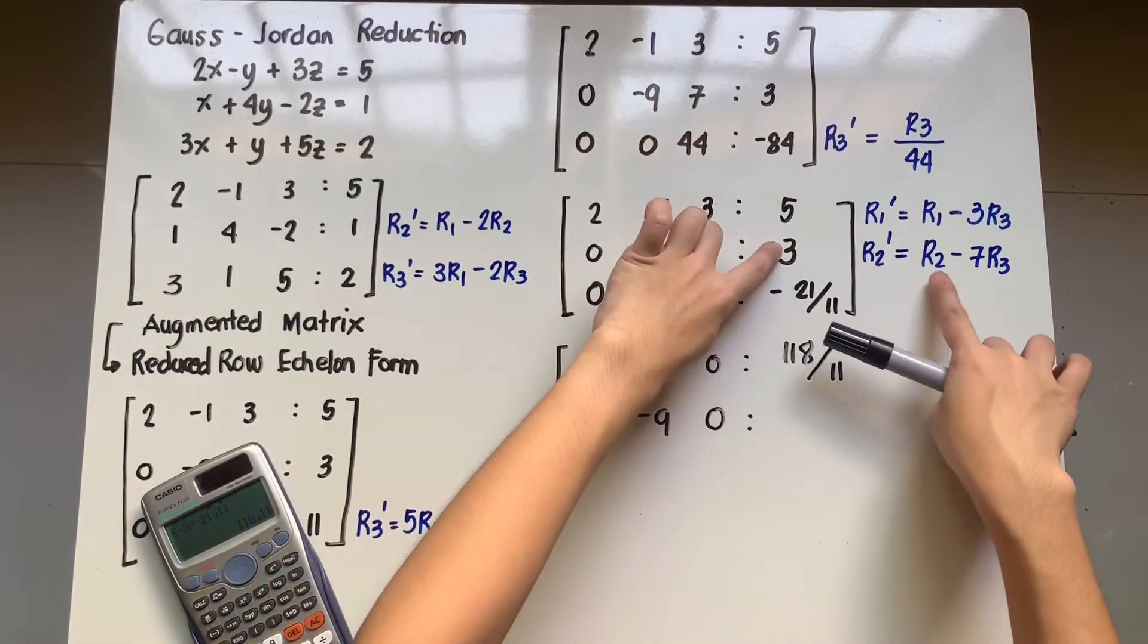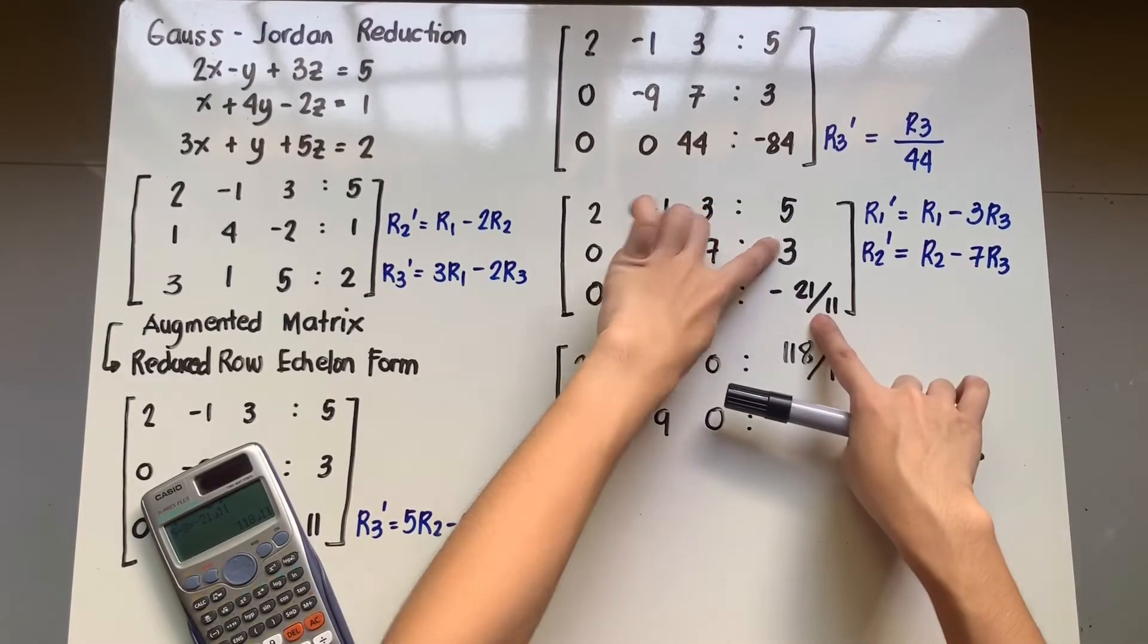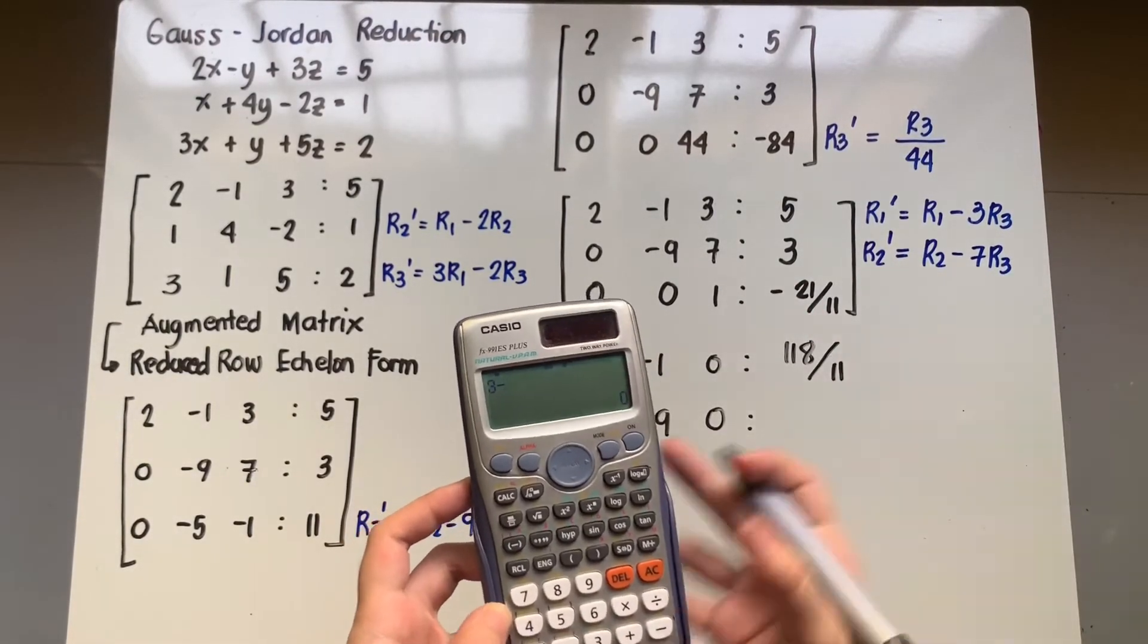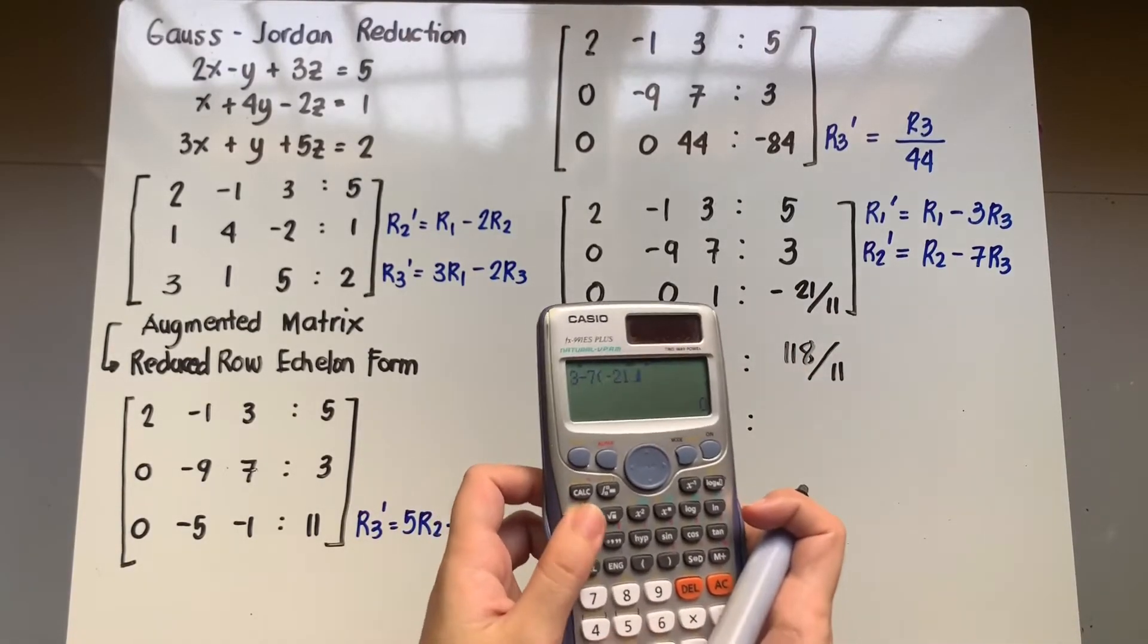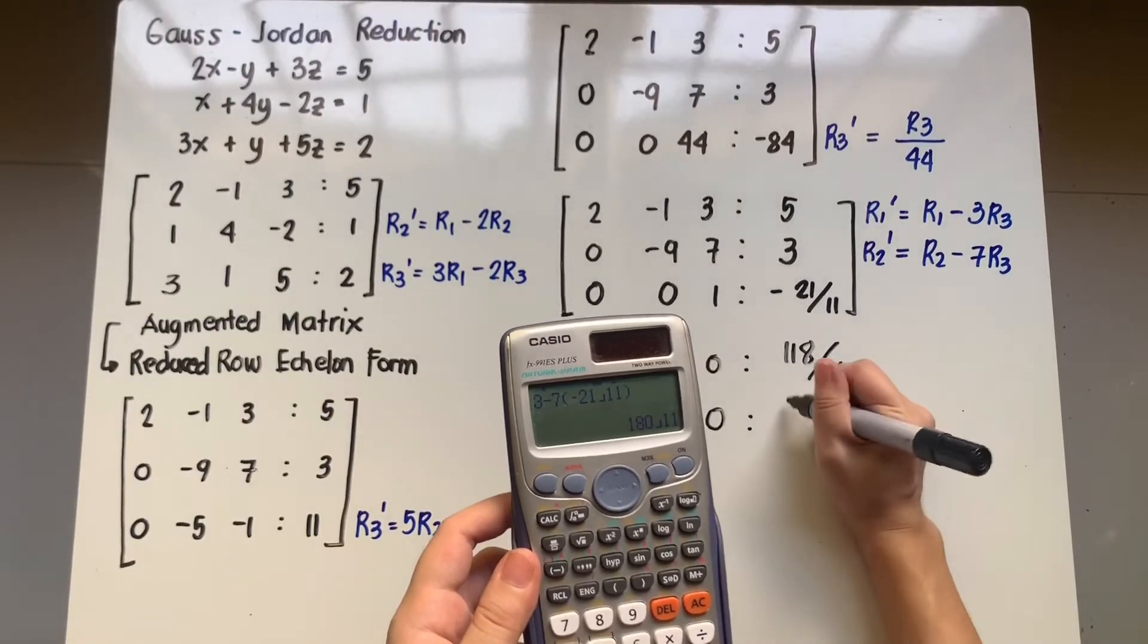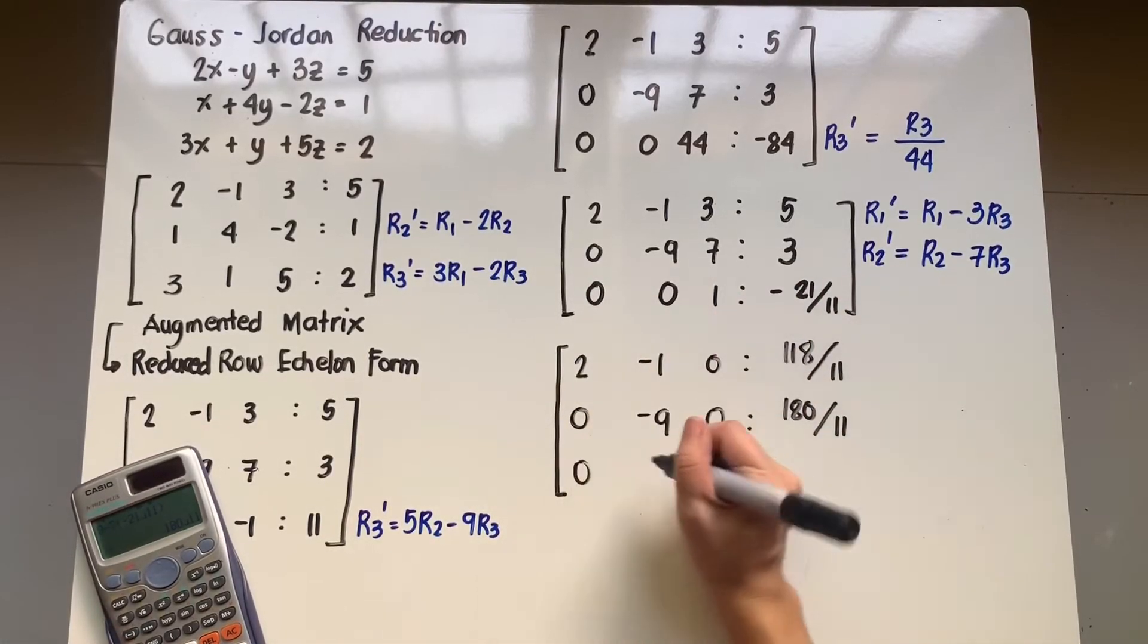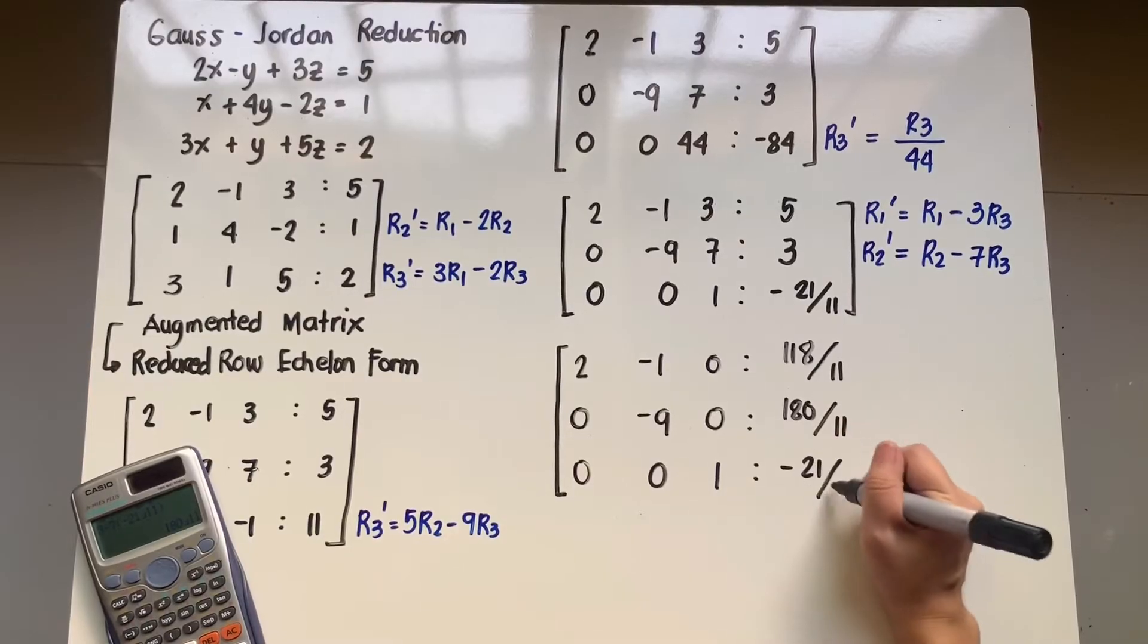And then we have R2 which is 3 minus 7 times R3. So let's get our calculators for that. You have second row is 3 minus 7 times R3 which is negative 21 over 11. And that gives us 180 over 11. And then there will be no changes for the third row. So I'll copy that as 0, 0, 1, negative 21 over 11.